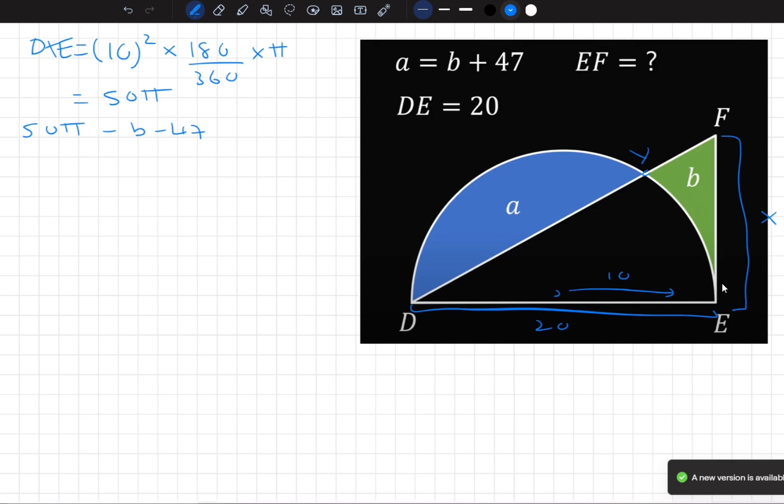Now, the area of EFD is going to be equal to a half times X times 20, which is equal to 10X.